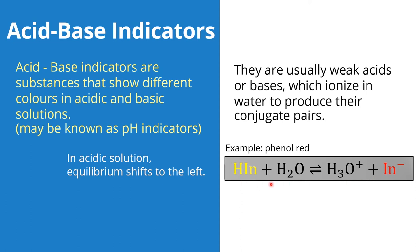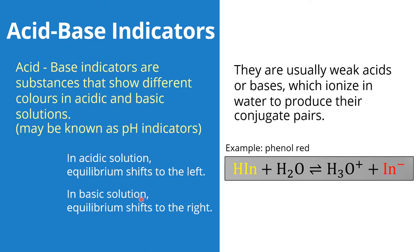You remember about the shift of equilibrium from chapter one, right? If phenol red is put into an acidic solution, there are a lot of hydronium ions, so this equilibrium shifts to the left and the solution will appear yellow. If you put phenol red in a basic solution, there are a lot of hydroxide ions. The hydroxide ion reacts with the hydronium ion, so the equilibrium shifts to the right and the solution will appear red.